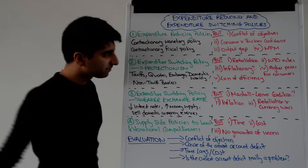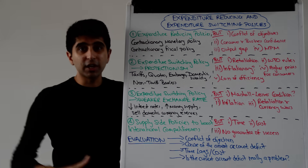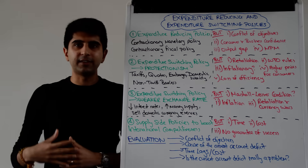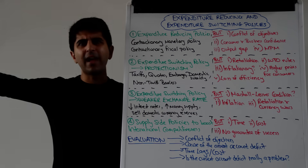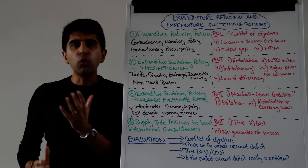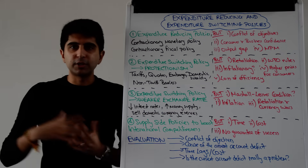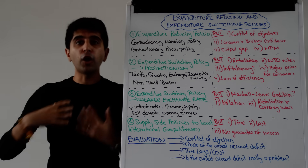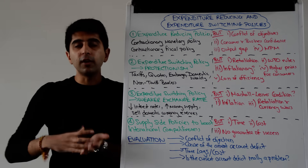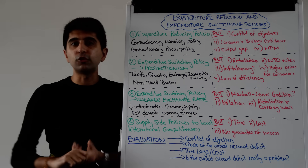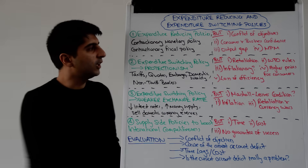All well and good in theory, but the problem is retaliation — and retaliation is a big issue. If these policies are supposed to rectify a current account deficit, retaliation can actually make it worse. By imposing tariffs on imports coming from abroad, your trading partners might retaliate and put even worse tariffs on our exports. We might save a bit on import expenditure, but if there is worse protectionism on our exports, export revenues could fall more than the import expenditure we are saving. Hence, over the medium term, the current account deficit may actually worsen due to retaliation.